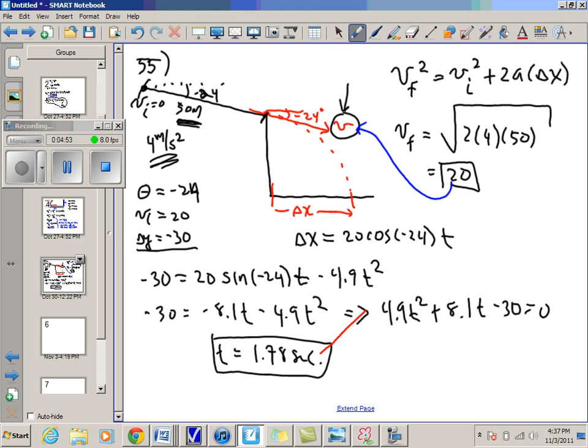And now I'm going to plug that in right up here. So my delta x ends up being 20 cosine negative 24 times 1.78, so this basically becomes 1.78. Do that out, and you get 32.5 meters.